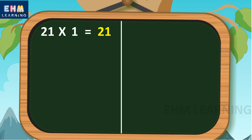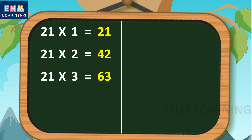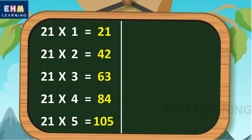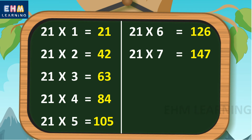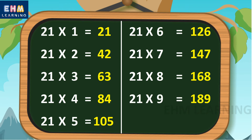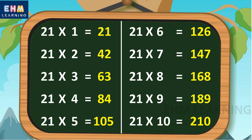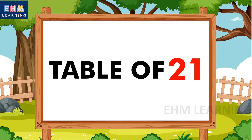Let's learn again. 21 ones are 21. 21 twos are 42. 21 threes are 63. 21 fours are 84. 21 fives are 105. 21 sixes are 126. 21 sevens are 147. 21 eights are 168. 21 nines are 189. 21 tens are 210.